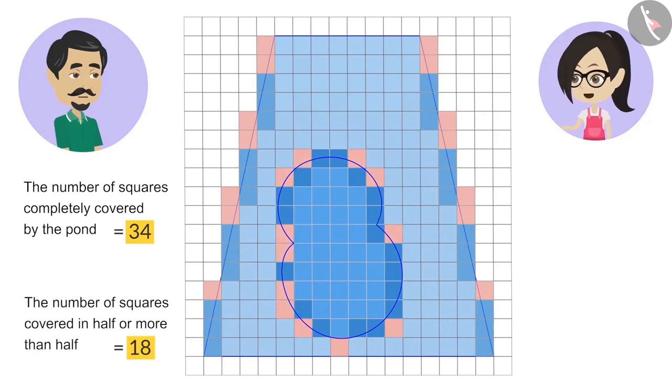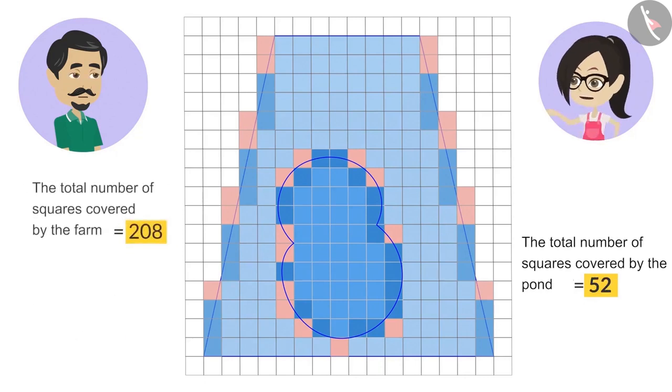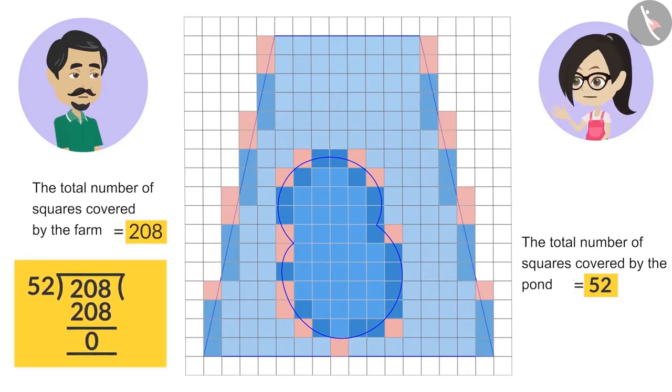The number of squares that are covered less than half are not counted. This shows that this pond has covered 34 plus 18 equal to 52 squares, which is one-fourth of the squares that are covered by the farm. That means, Dad, the engineer has measured it correctly. This pond covers exactly one-fourth of our farm.